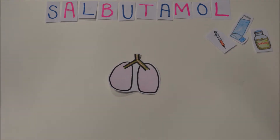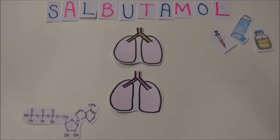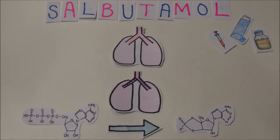Highly selective beta-2 adrenergic receptors are found on the bronchial smooth muscle within the lungs. Salbutamol stimulates these specific receptors. The enzyme adenyl cyclase is activated, which leads to the formation of cyclic AMP from ATP. High levels of cyclic AMP lead to the relaxation of the previously contracted bronchial smooth muscle, resulting in the dilation of bronchioles.